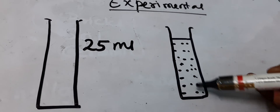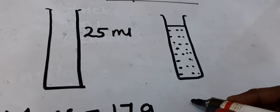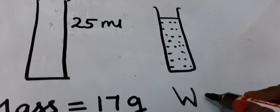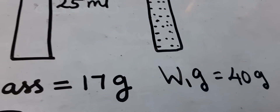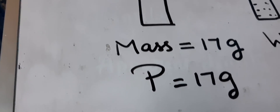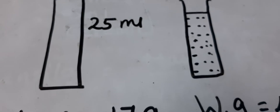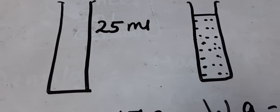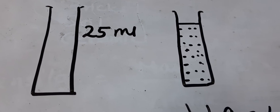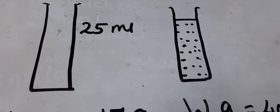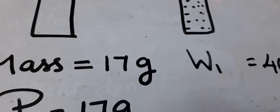Next, fill the measuring jar till the marking with distilled water and take the weight — let its mass be W1. The measuring jar is filled with distilled water up to the 25 ml marking. The measuring jar plus water weighs 40 grams, so W1 = 40 grams.